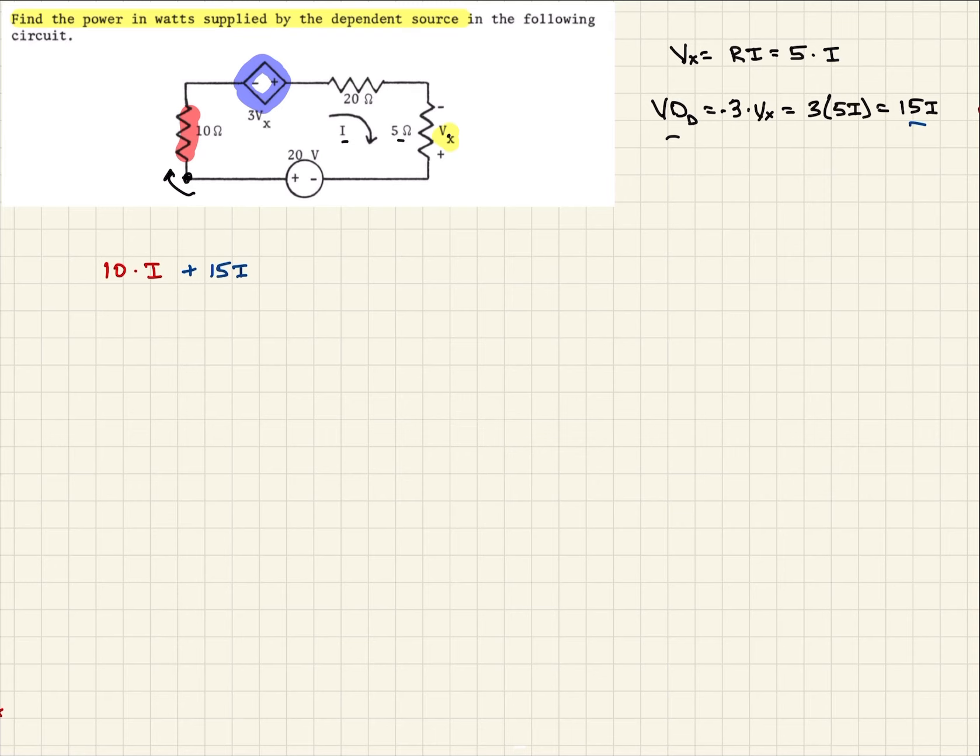And so again, we continue around the loop, and we come to this component, and again, that's just going to be Ohm's law resistance times current. So that will be plus 20 times I. And finally, we come to our Vx term, which we've already defined there. And so when we do that one, that one's, again, Ohm's law, that would be plus 5I. And if we sum those up, they should equal to this final voltage source, which would be 20 volts.